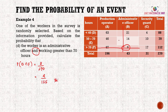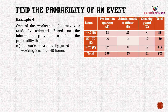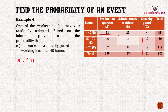Calculate the probability that the worker is a security guard working less than 40 hours, i.e., P(C∩D). From the table, the intersection of security guard (C) and less than 40 hours (D) is 4, so P(C∩D) = 4/270, which simplifies to 2/135.